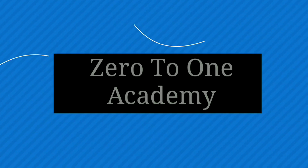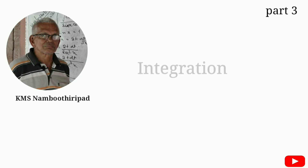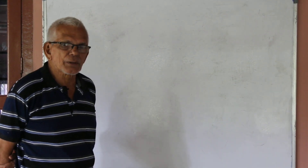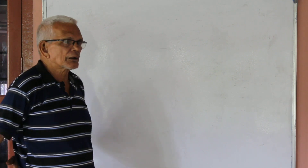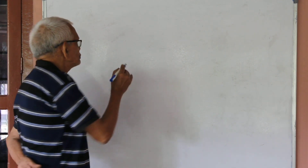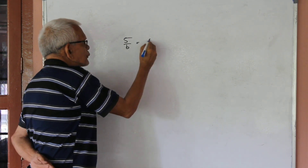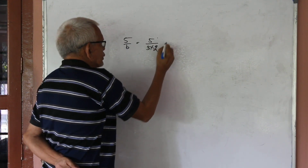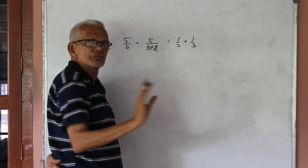Welcome to Partial Fraction. Consider 5 by 6. 5 by 6 is equal to 5 by 3 into 2, equal to 1 by 2 plus 1 by 3. That is Partial Fraction.